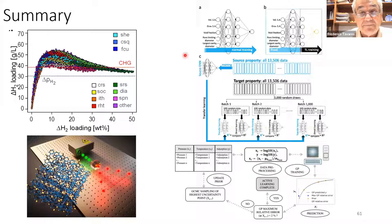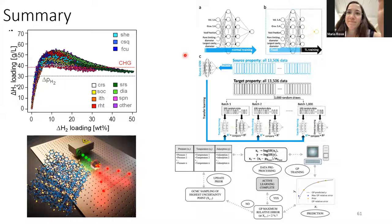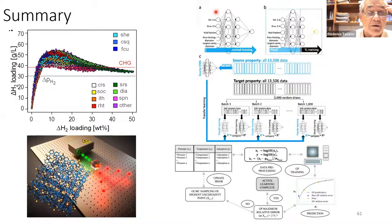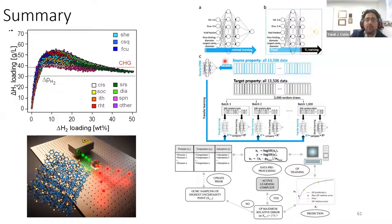Professor Frey asks: in your machine learning model, the descriptors you choose — I couldn't see any energetic information like adsorption energy. Why not? The reason is that textural properties — surface areas, pore sizes — can be obtained much more quickly than heats of adsorption. For xenon-krypton separations, work in the literature does point out that you need energetic-based descriptors. But for hydrogen and methane, it turns out we don't really need those to make accurate predictions.